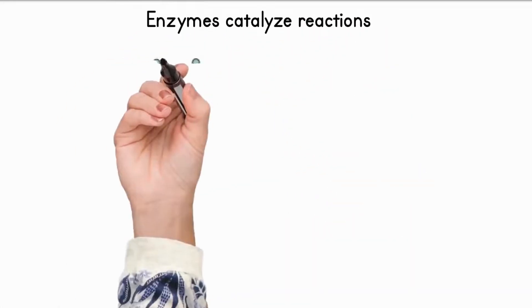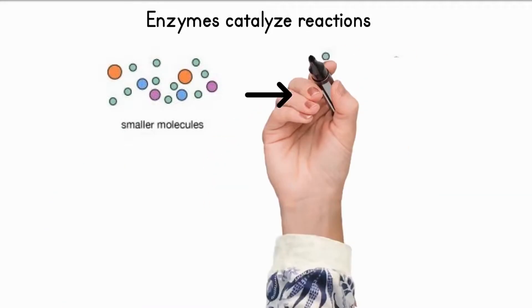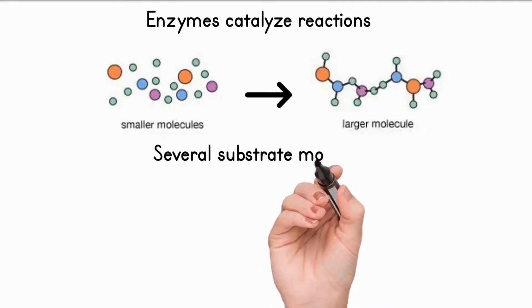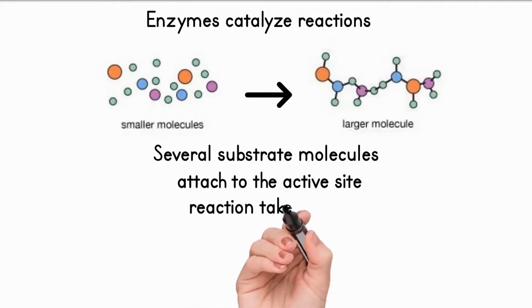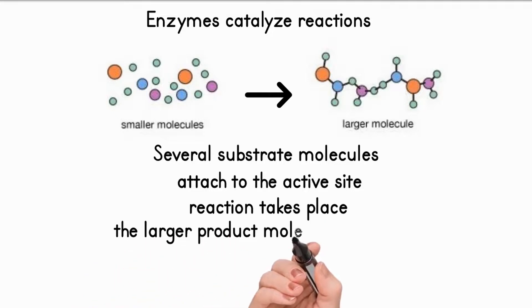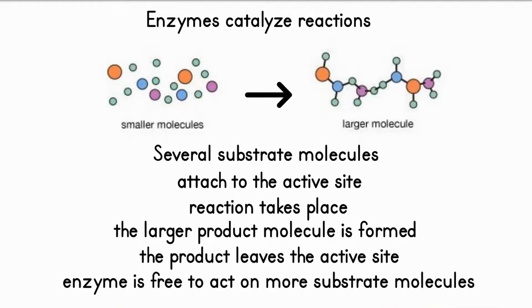Enzymes also catalyze reactions where large molecules are built up from smaller ones. In this case, several substrate molecules attach to the active site. The reaction takes place and the larger product molecule is formed. The product then leaves the active site and the enzyme is free to act on more substrate molecules.